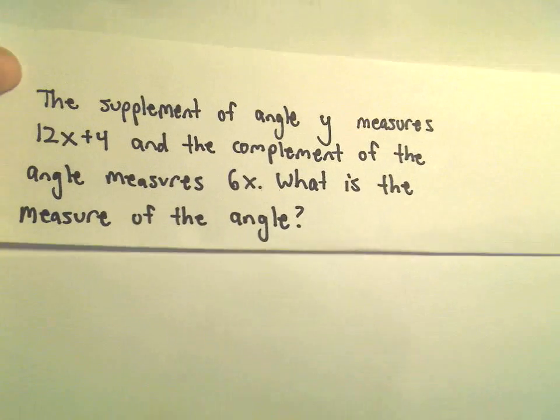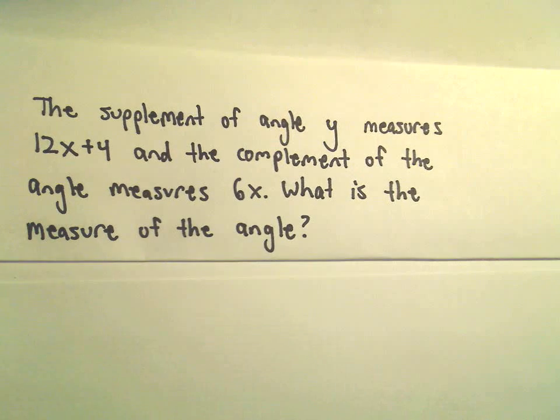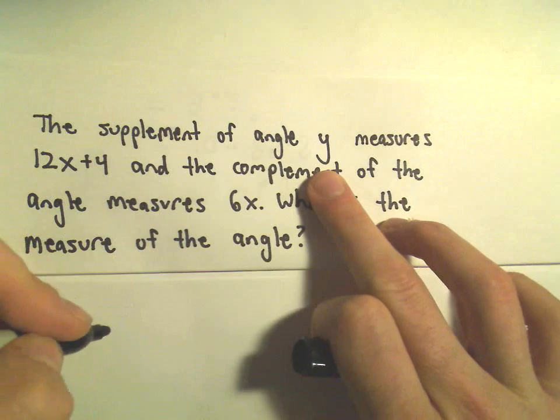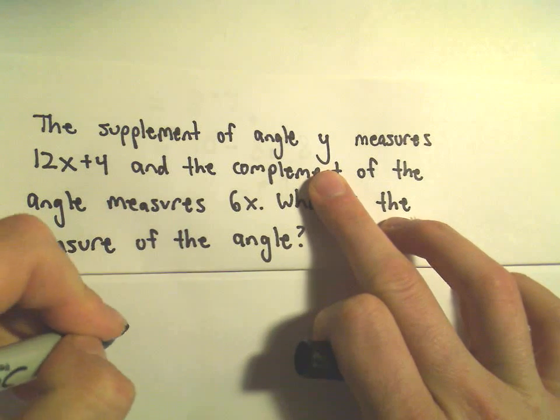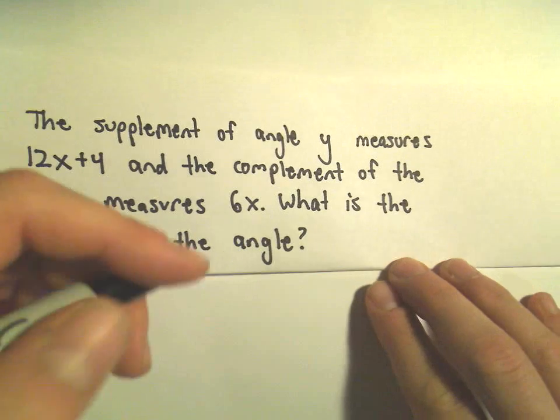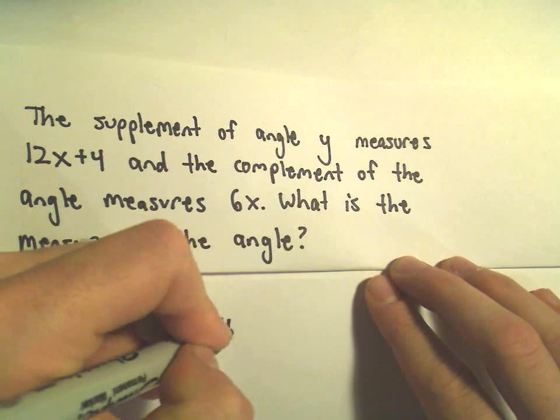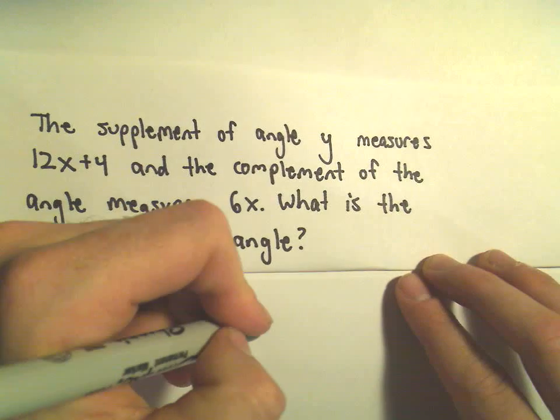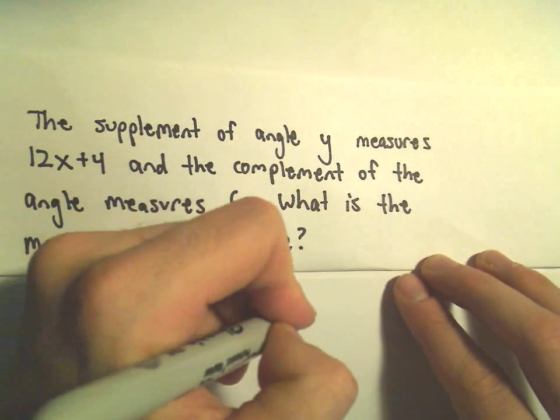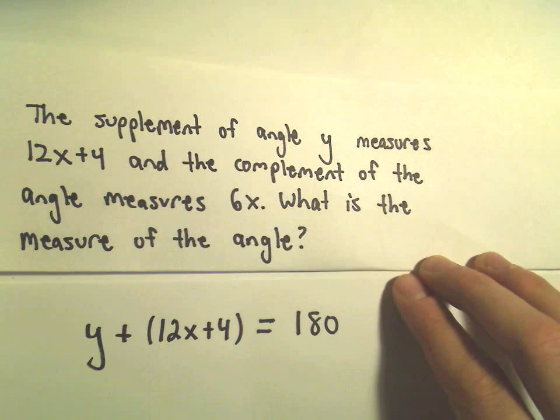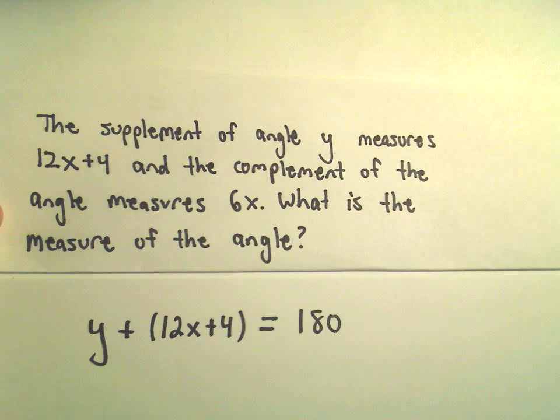So what we're going to have to do is simply make a little system of equations here. We know if we take the measure of angle y plus the measure of this other angle, which has measure 12x plus 4, those are supplementary, so when we add those together that's going to equal 180, and we'll assume things are in degrees.